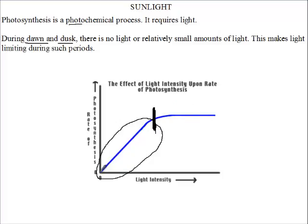So initially, at this point, light was the limiting factor. Any increase in the light intensity will ensure that the rate of photosynthesis increases. When it gets to a point, it stays the same because light is no longer a limiting factor. Light is no longer a limiting factor, but then other factors become the limiting factors.